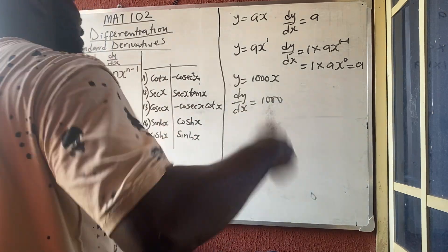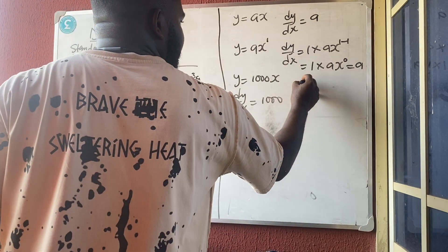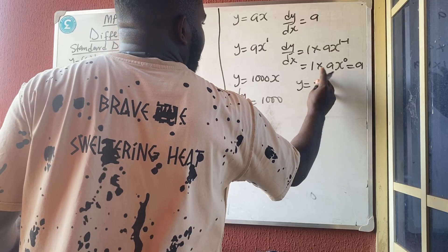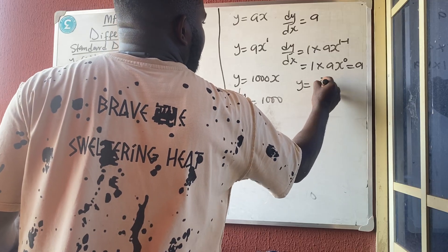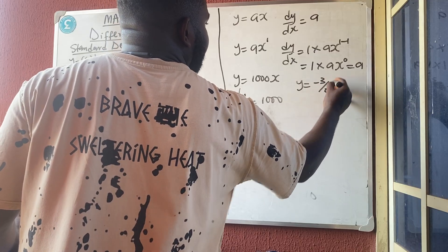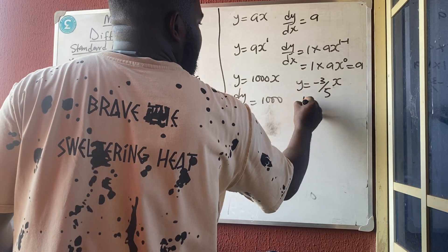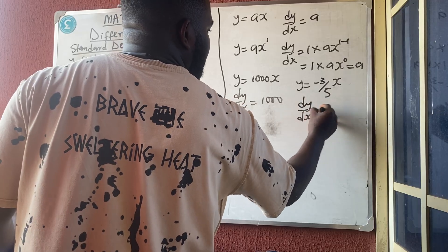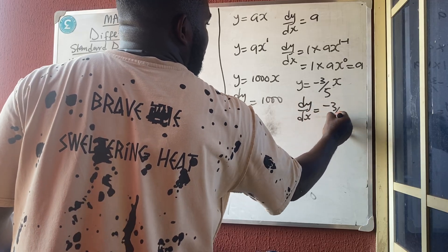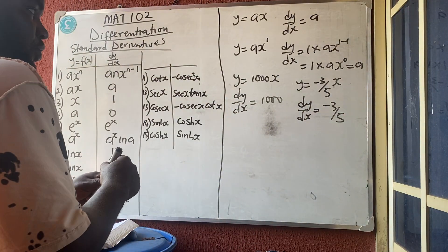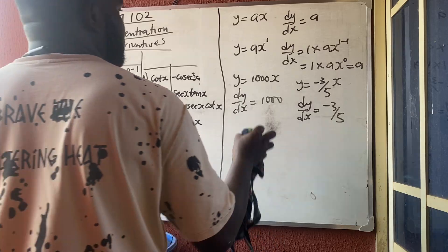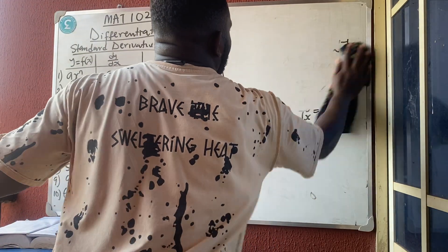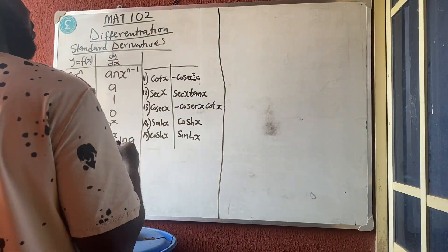For example, if y = 1000x, then dy/dx = 1000. If y = −(3/5)x, then dy/dx = −3/5. There is nothing further to solve — the differentiation of any linear term without a power is just its coefficient.